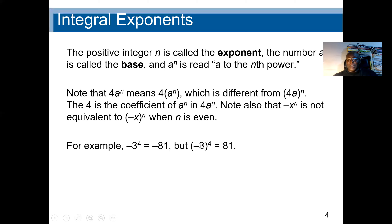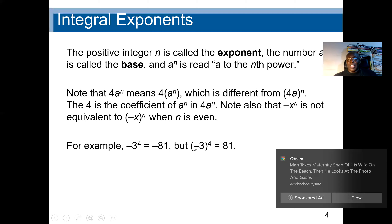If I have (negative 3) raised to the power of 4, it means the power affects the negative as well. Any time we have a negative and the power is an even number, the sign will change to positive. So negative times negative is positive, times negative is negative, times another negative is positive — giving us 81 again.